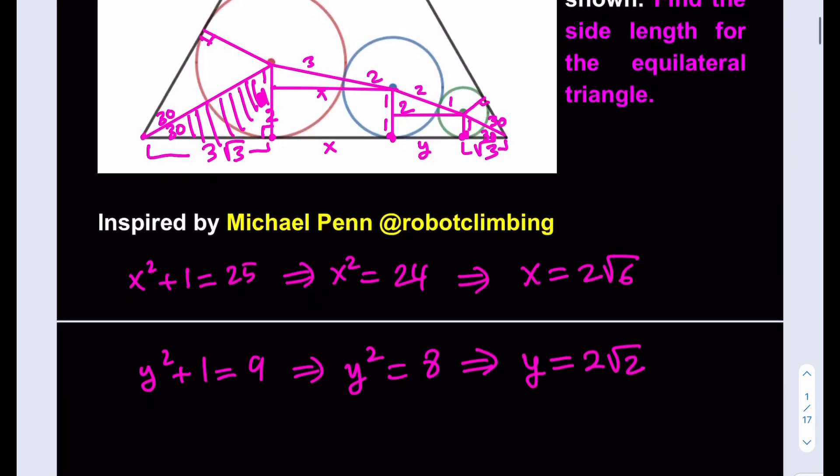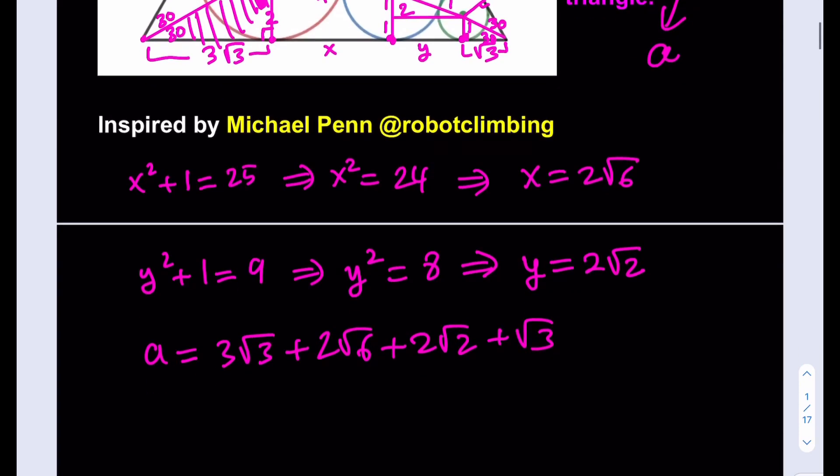Because all lengths are equal we just need to add these pieces. Let's call the side length of the equilateral a. So a is going to equal 3√3 + x which is 2√6 + y which is 2√2 + √3. If you put it all together, the side length of the equilateral triangle is 2√6 + 4√3 + 2√2.